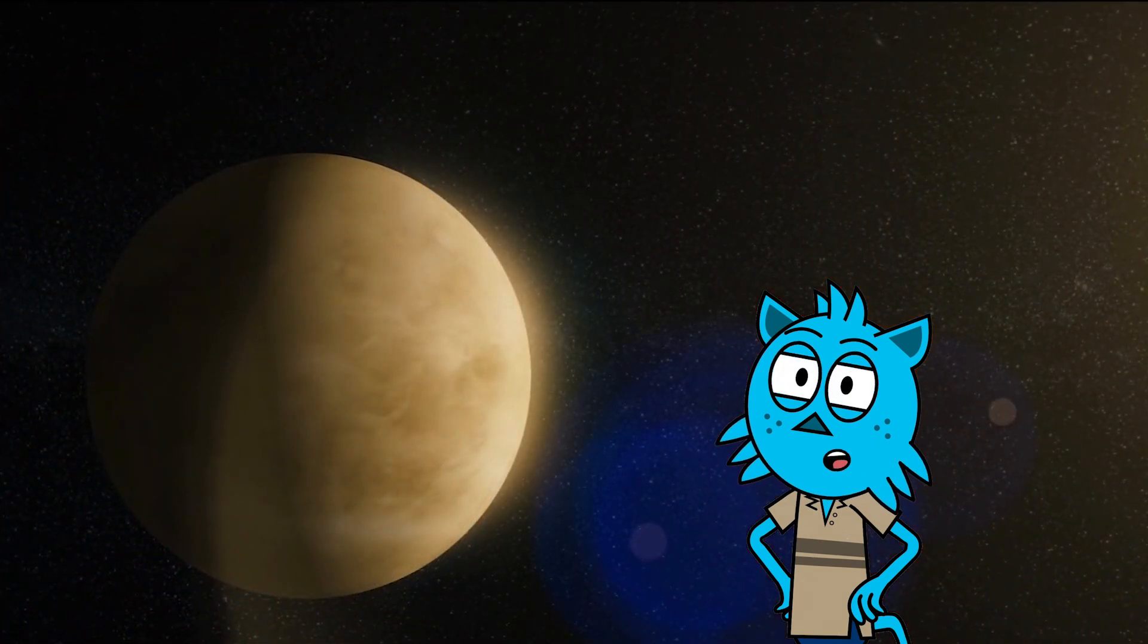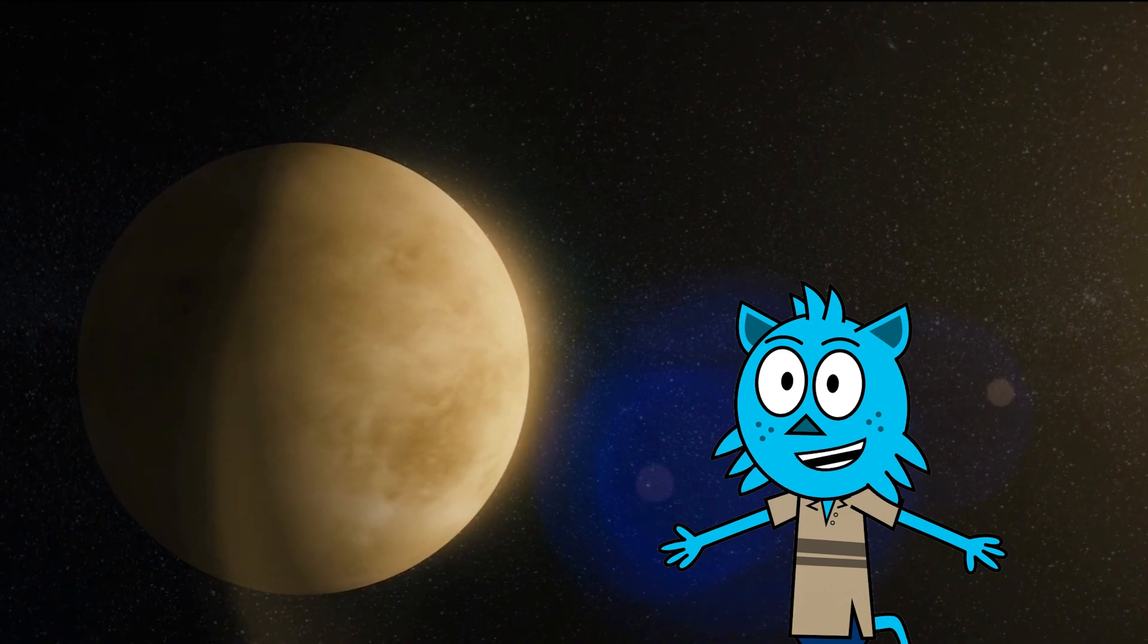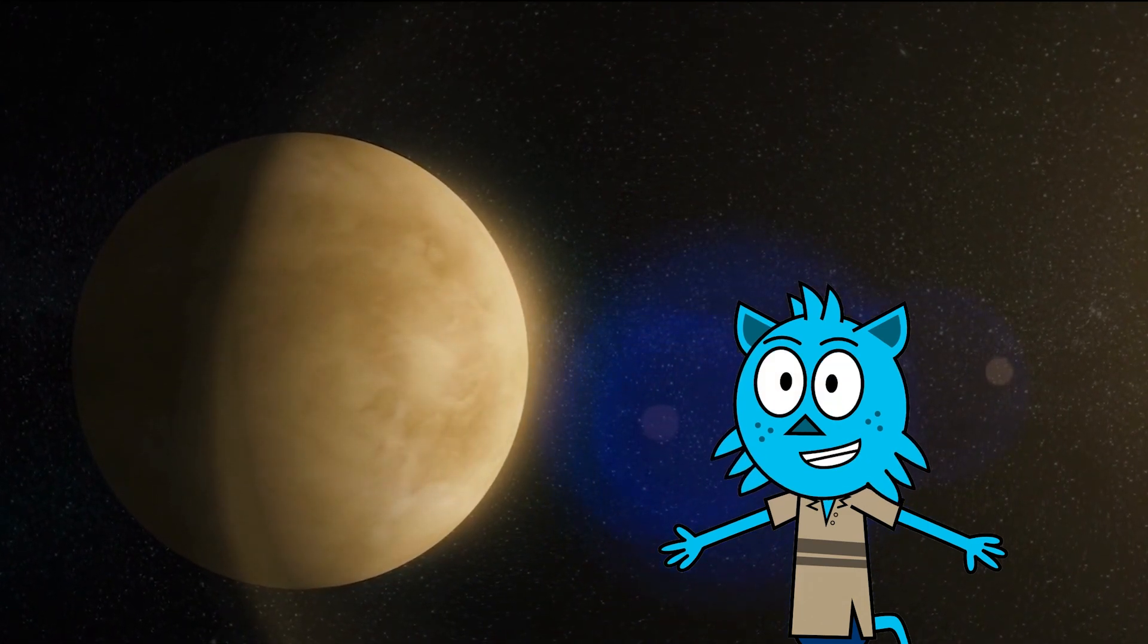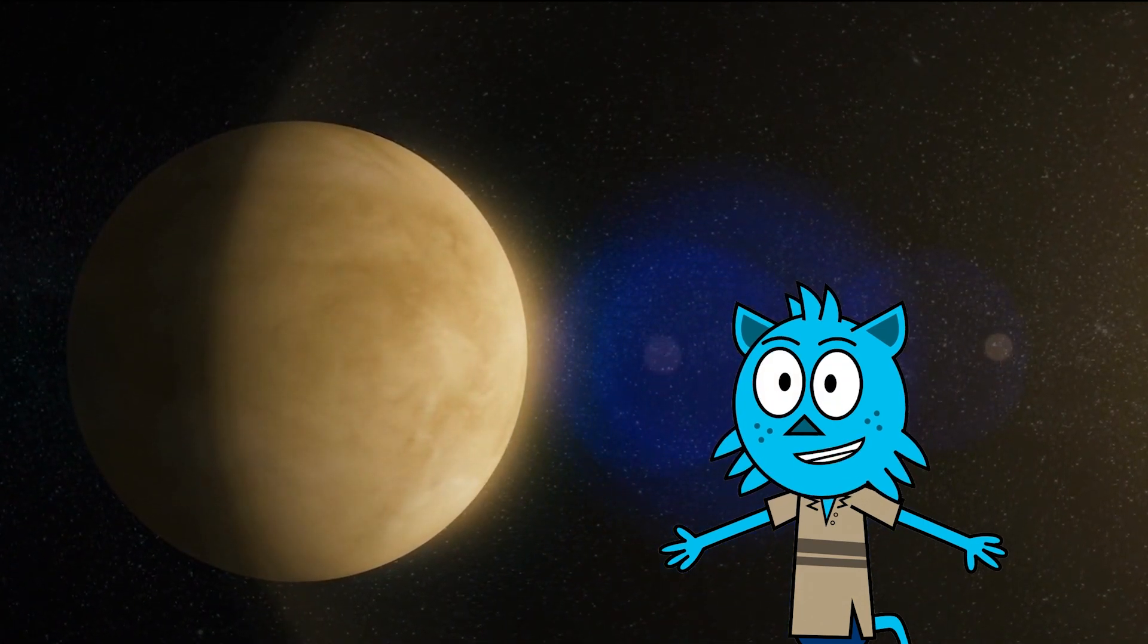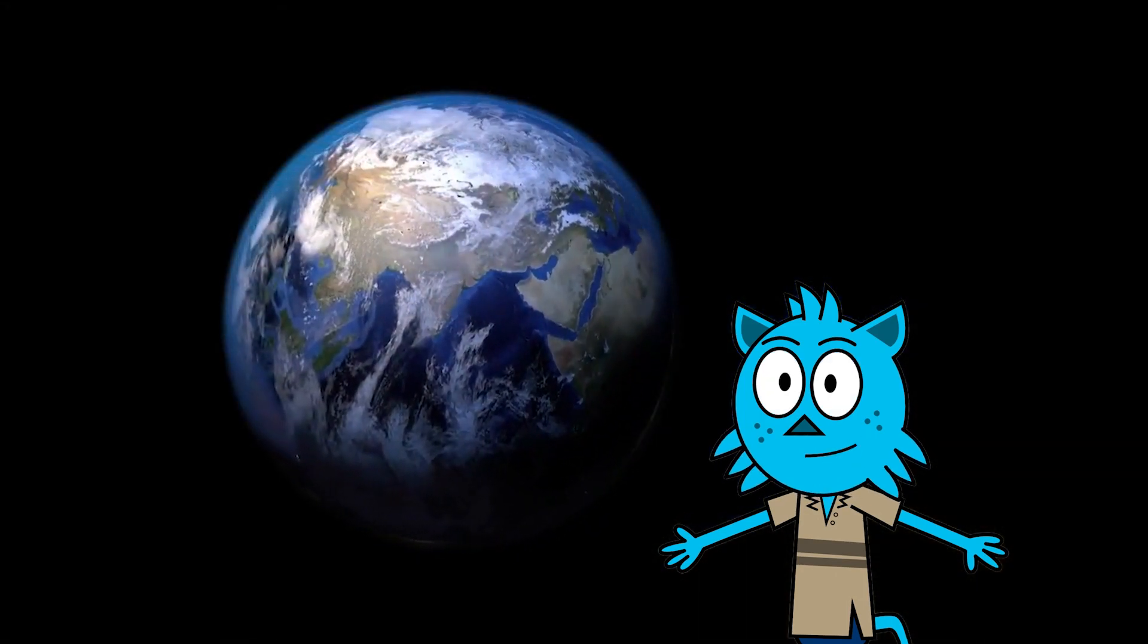Now, let's visit Venus, the hottest planet in our solar system. It's like a fiery oven all the time. Venus has thick clouds that trap heat, making it even hotter. It's a pretty tough place to live.